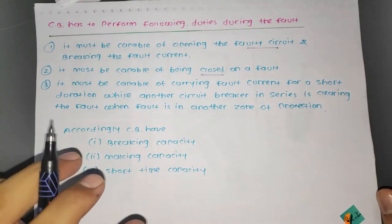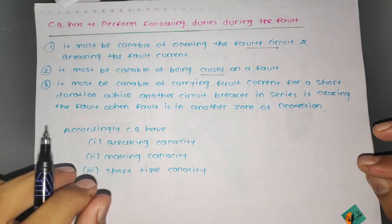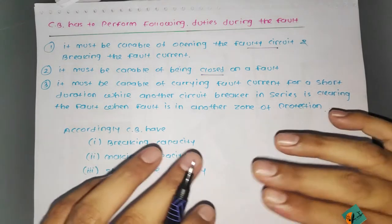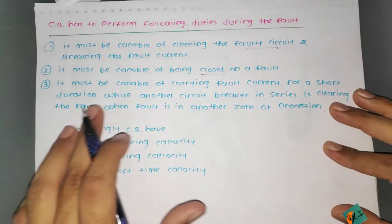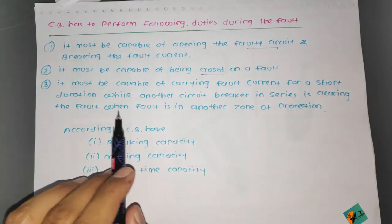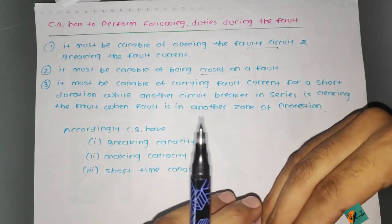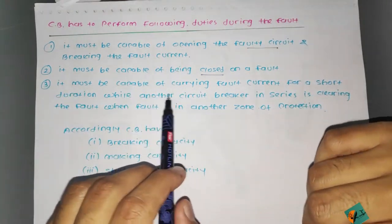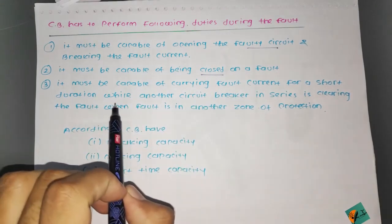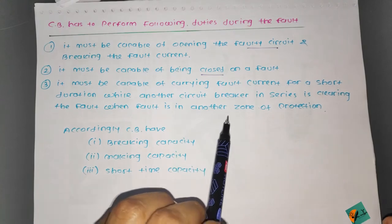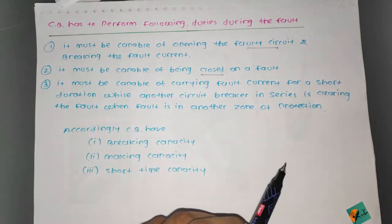Third, the circuit breaker must be capable of carrying fault current for a short duration while another circuit breaker in series is clearing the fault, when the fault is in another zone of protection. Zone-wise, the circuit breaker placed there must be capable of carrying fault current for a short duration while the other circuit breaker operates.